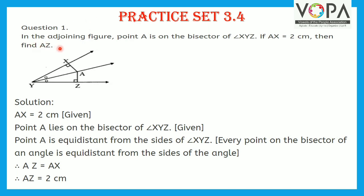Practice set 3.4, question 1. In the adjoining figure, point A is on the bisector of angle XYZ. If AX is equal to 2 cm, find AZ. Solution: AX is equal to 2 cm, given. Point A lies on the bisector of angle XYZ. Therefore, point A is equidistant from the sides of angle XYZ, because every point on the bisector of an angle is equidistant from the sides of the angle. Therefore, AZ is equal to AX, which is 2 cm.